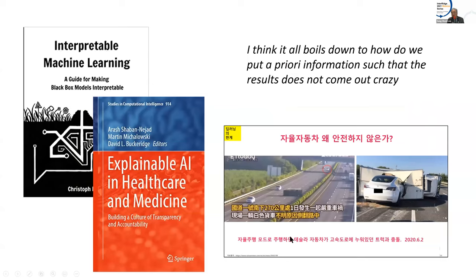Here you have the Tesla car bumping into a van because it did not understand what it was. Now there is a strong movement because sometimes in medical science the ability to explain is very important. There are now areas for interpretable machine learning and explainable AI, but this is not yet in full force — it's just starting and a lot needs to be done.